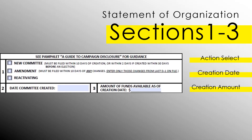Section 1 is where your committee will indicate what action it is trying to accomplish with this form. If you're registering a new committee, check the box for new committee. If making an amendment to an existing committee, check amendment. And if reactivating a previously finalized committee, check the reactivating box. If making an amendment, you only need to fill out the sections of the D-1 that are being amended. However, if you're registering a new committee or reactivating an old committee, you'll want to fill out the entirety of the D-1 to give us all the current information regarding your group.